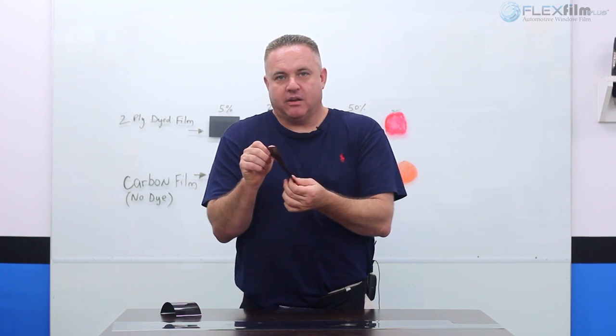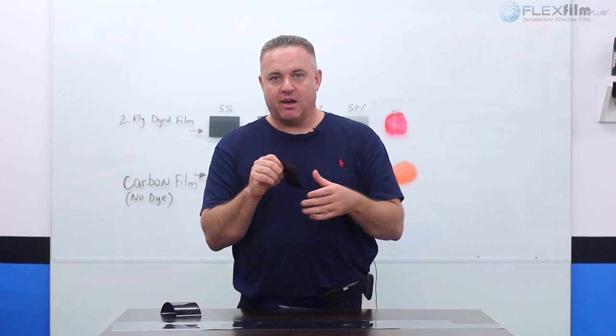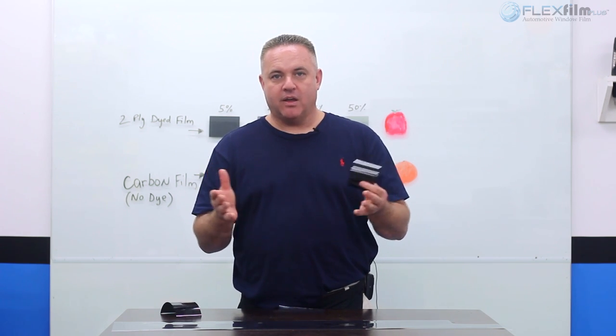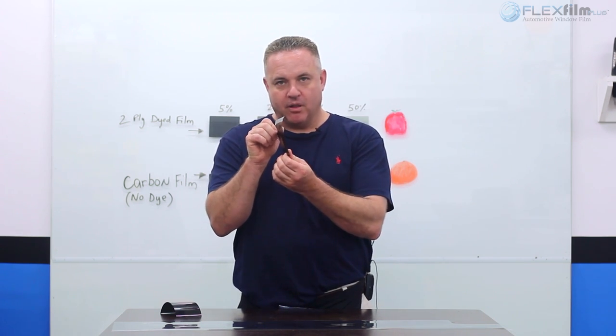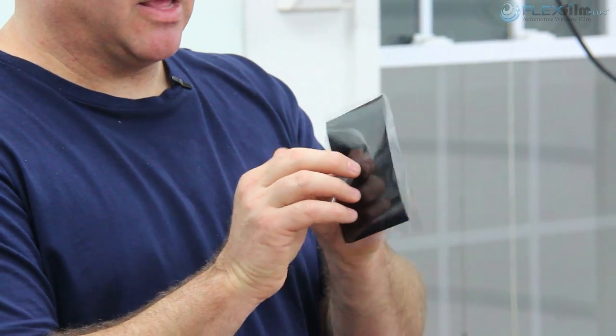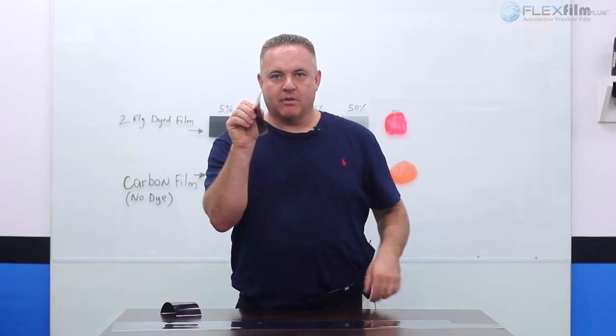The dye film is great because it comes in any shade you want — you can add more dye to make it darker, or less dye to make it lighter. But dye film doesn't do very well blocking out infrared radiation, so it needs help. What happens is these two products are literally laminated together at the factory, and this gives you the apple. This is a hybrid ceramic technology.